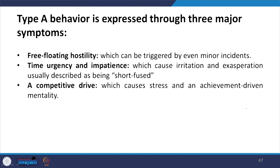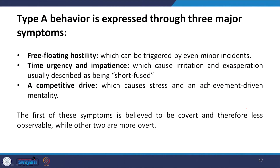Type A personality has time urgency and impatience, which cause irritation — usually described as being short-fused. They immediately get fired up. They have a competitive drive which causes stress and an achievement-driven mentality. Because they want to move fast and achieve their goal, this causes stress. This type of behavior is easily observable, and management or organizations are prompted to take action quickly.